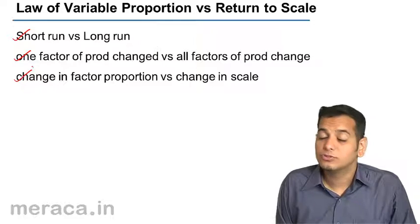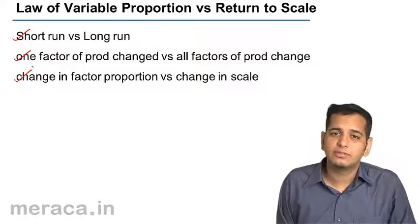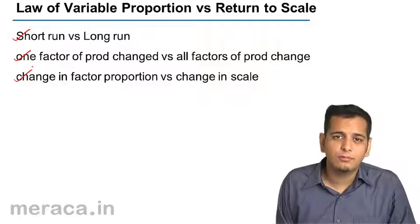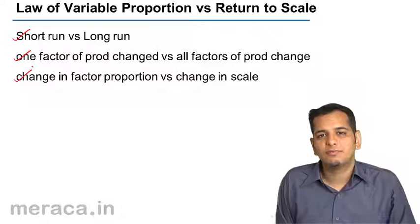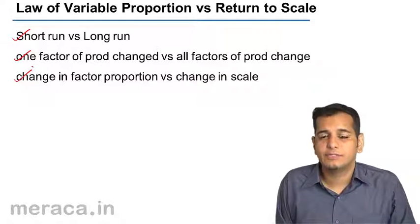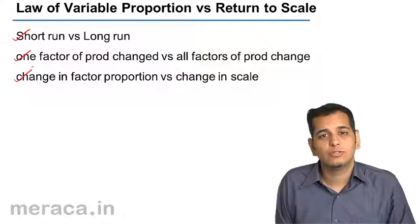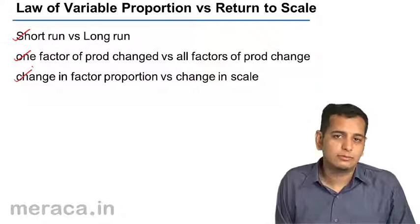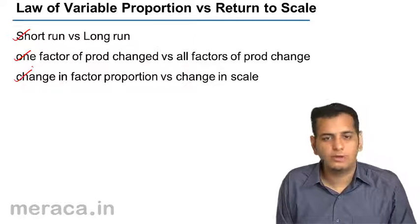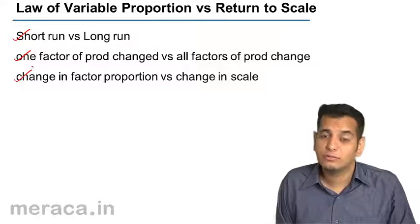This is not the case in the law of variable proportion. The proportion amongst the factors employed changes because only one factor is variable and all the other factors are constant.